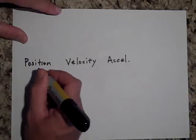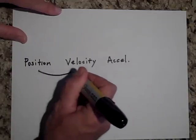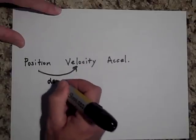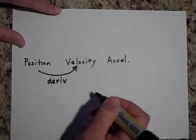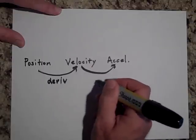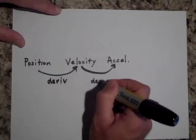And if you had an object's position and you wanted to get its velocity, if you remember, you took the derivative. And if you had the velocity and wanted to get its acceleration, then again, you took the derivative.